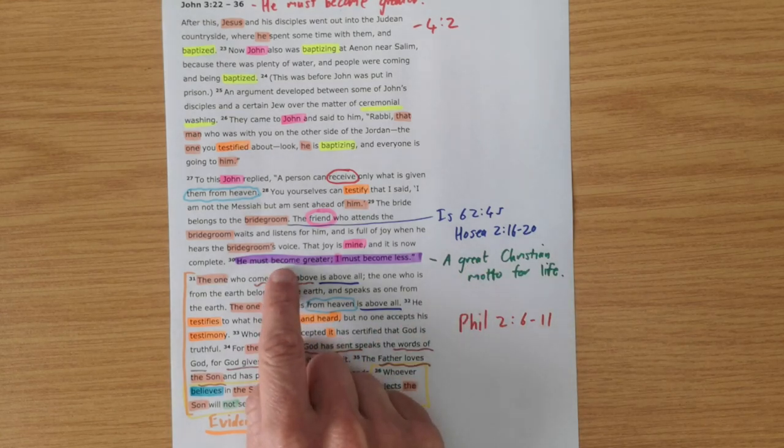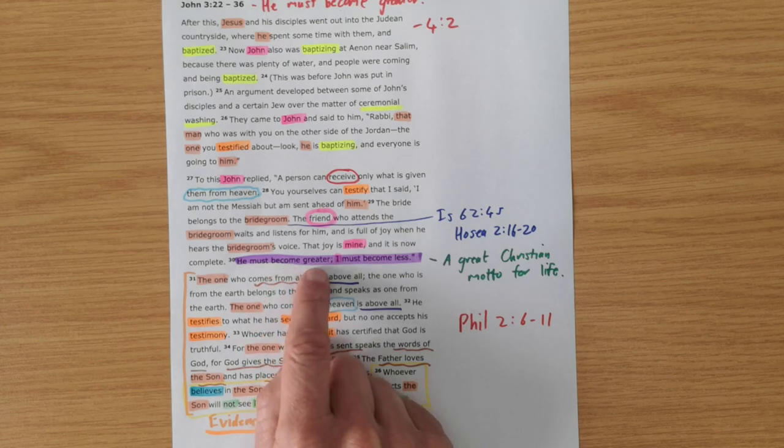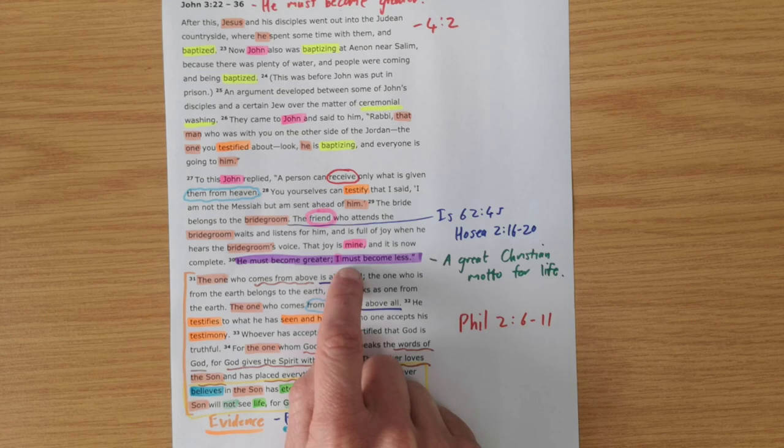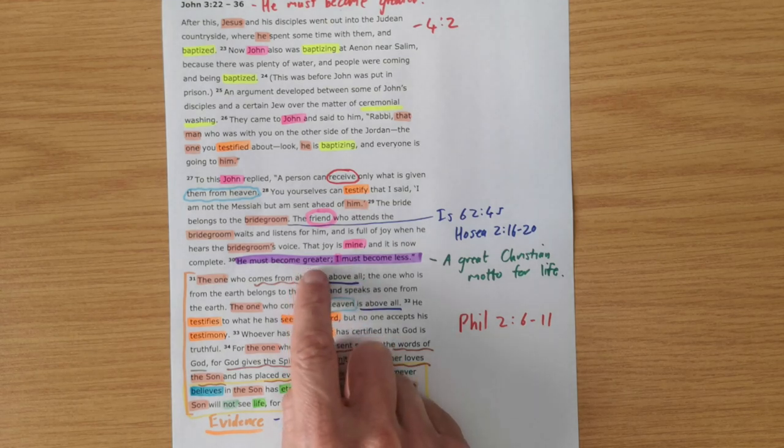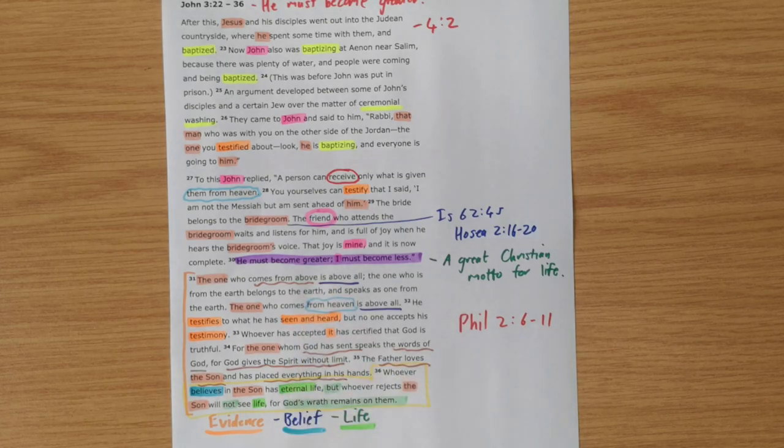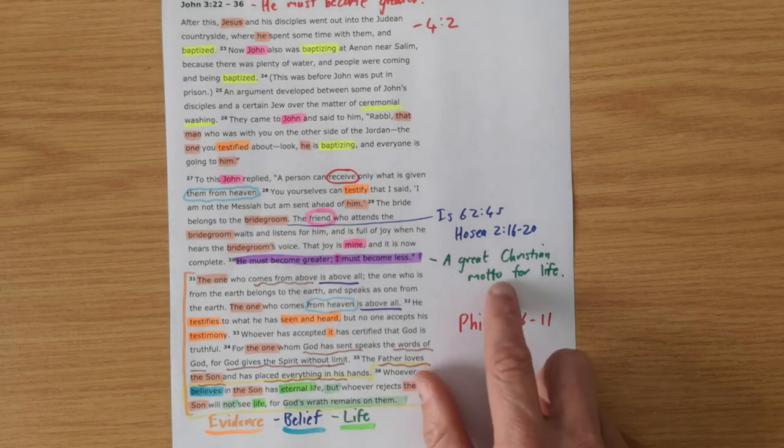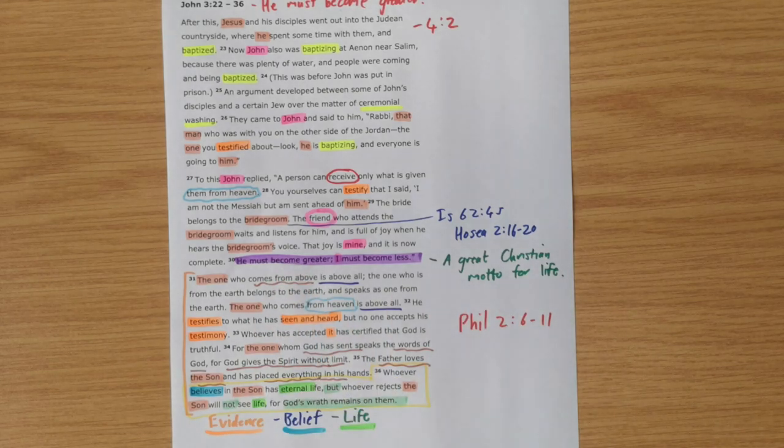we want Jesus' greatness to become increasingly known. So we need to pray that we would in a sense get out of the way, that we wouldn't be the focus in any way as we do the work that God has given us to do, but we would be wanting to make Jesus' greatness known. So as you dig into this passage more yourself, as you teach it to others, let's pray that God would help us to take on this attitude, to adopt this motto for our lives, he must become greater, I must become less.